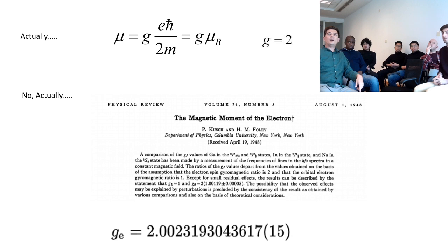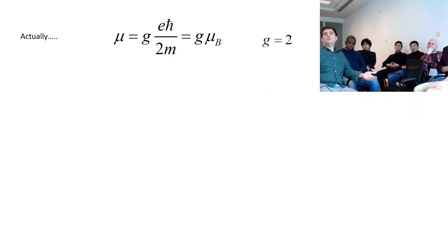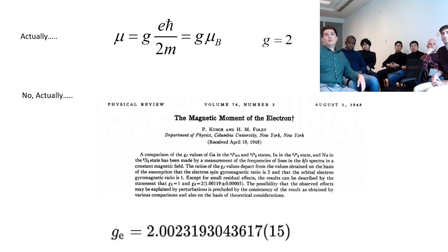If you actually do a quantum mechanical calculation then it is not actually equal to eh-bar over 2m. There is this factor of this gyromagnetic ratio, which basically - you can see that this calculation is just an order of magnitude kind of estimate. So if you do a real quantum mechanical calculation then it turns out to be 2m.